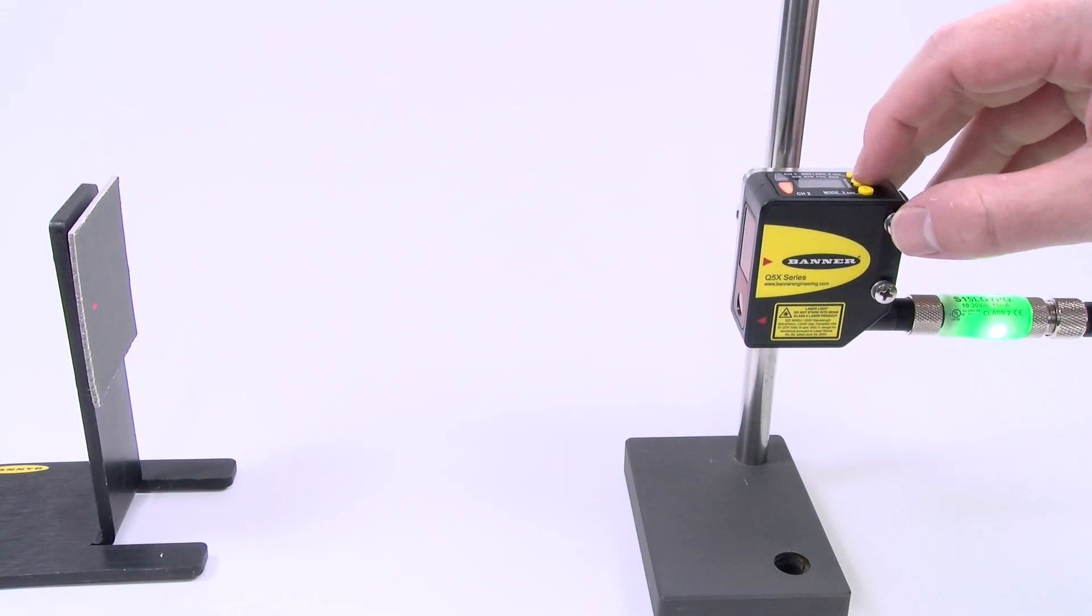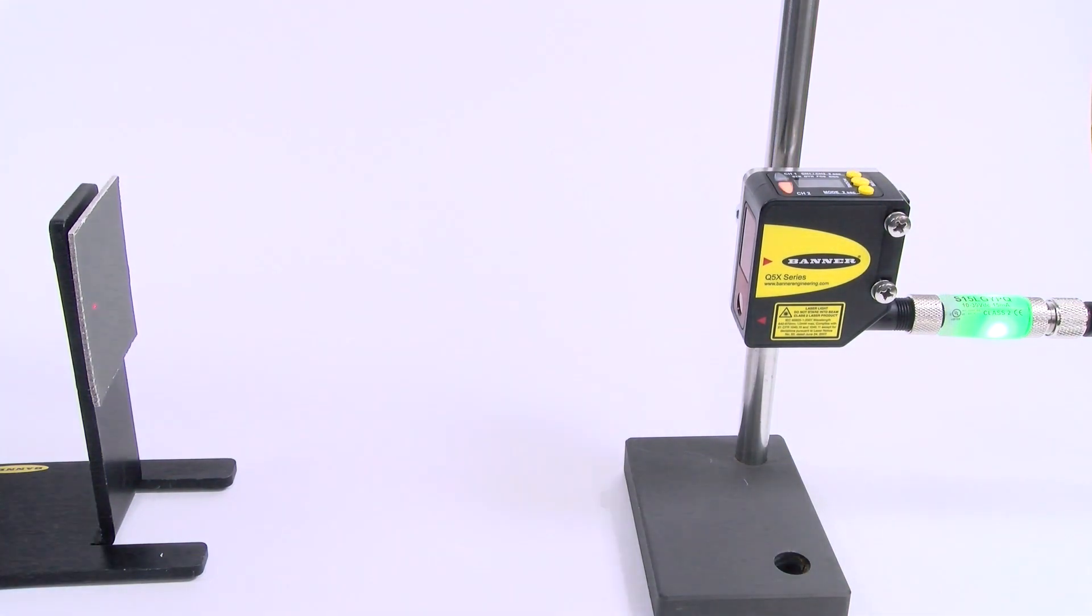In this teach mode we can also do a two-point background suppression by teaching the same point twice. The sensor will recognize that two of the same point have been taught and will set the switch point just in front of the top condition.